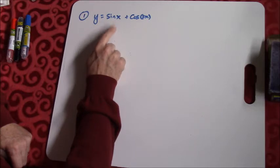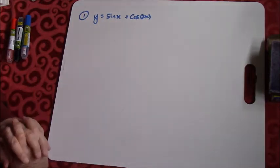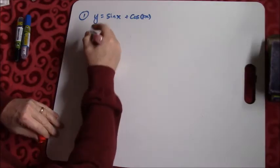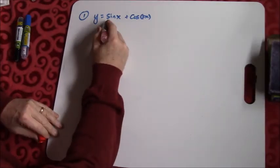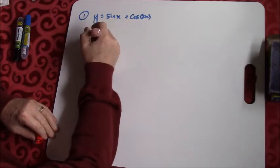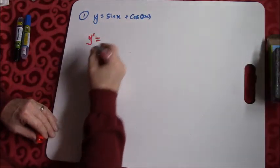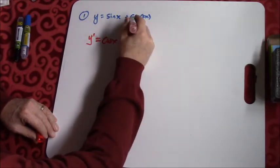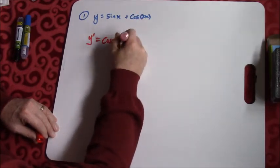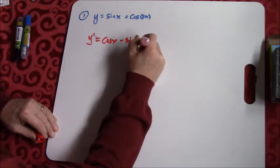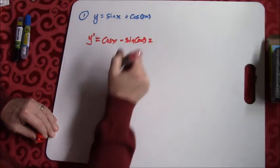Go ahead and try it. To find the point of inflection and discuss concavity, we need the second derivative. The first derivative is going to be cosine of x. The derivative of cosine would be negative sine of that angle 2x, times the derivative of the angle, which would be 2.